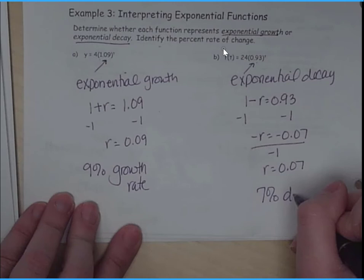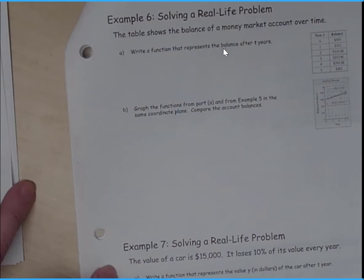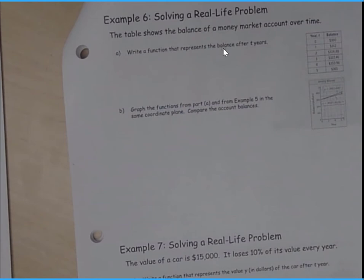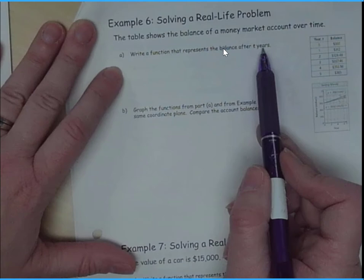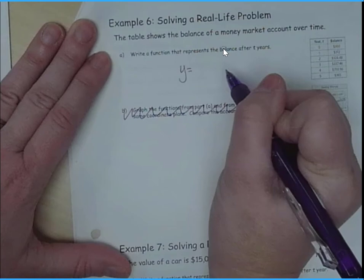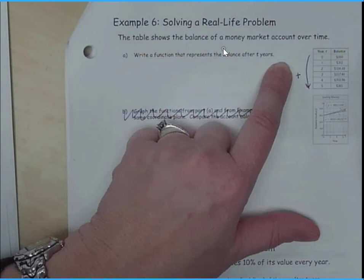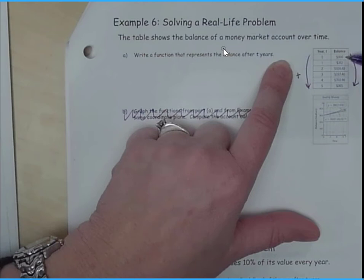So I've got an exponential decay at 7%. So let's take a look here at a real life problem. The table shows the balance of the money market account over time. Write a function that represents the balance after two years. So I'm actually going to skip this graphing part, because it's right there. So we're looking at our growth here. Now, I can see here that this is increasing by 1. Now, this is a little bit trickier part, because I know I'm increasing. But how do I go from 300 to 312 to $324.48? Well, we think about it, it can actually work a little bit backwards here.